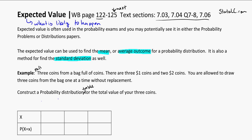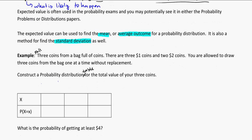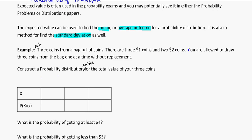So if we take a look at an example, pull three coins from a bag full of coins. There are three $1 coins and two $2 coins, and you're allowed to draw three coins from the bag, one at a time without replacement. So you reach your hand and grab a coin, assume you can't tell the difference by touch between a $1 and a $2 coin, put it in your pocket, and do that two more times until you get three coins in your pocket. We want to construct a probability distribution table for the total value of the three coins that end up in your pocket.